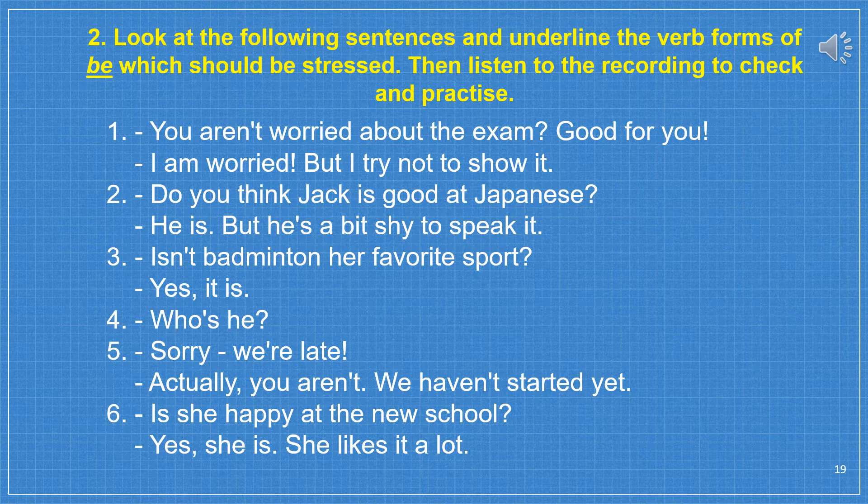Sentence 1: 'You aren't worried about the exam — good for you. I am worried but I try not to show it.' Sentence 2: 'Do you think Jack is good at Japanese?' 'He is, but he's a bit shy to speak it.' Sentence 3: 'Isn't badminton her favourite sport?' 'Yes, it is.' Sentence 4: 'Who's he?' Sentence 5: 'Sorry, we're late.' 'Actually, you aren't — we haven't started yet.' Sentence 6: 'Is she happy at the new school?' 'Yes, she is — she likes it a lot.'